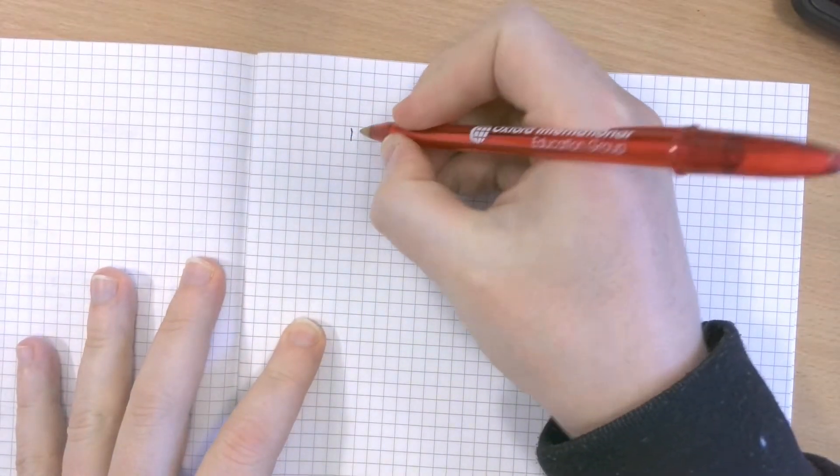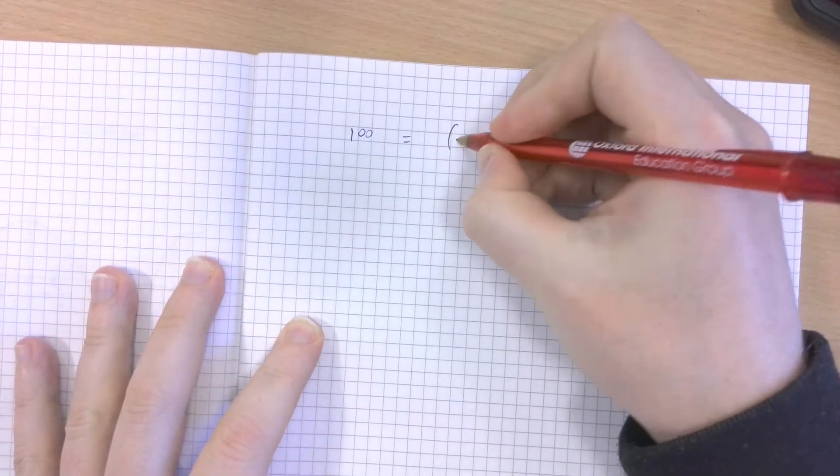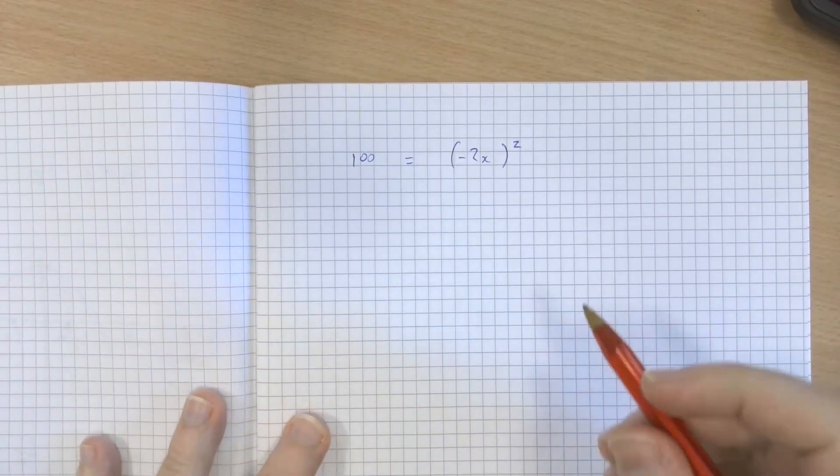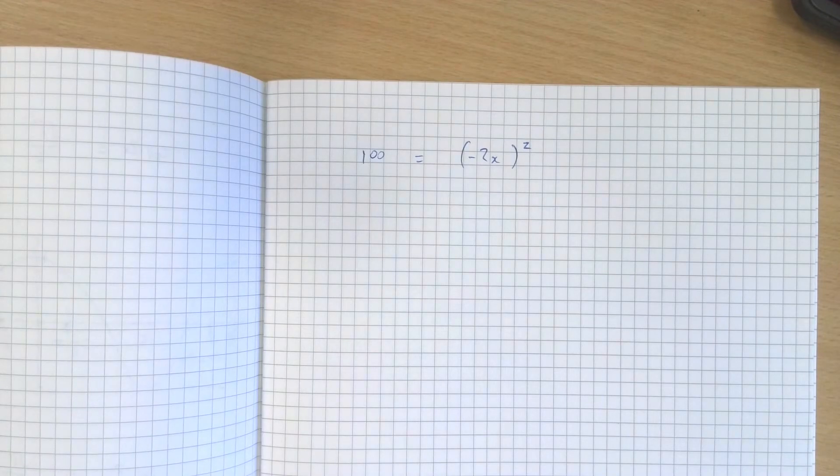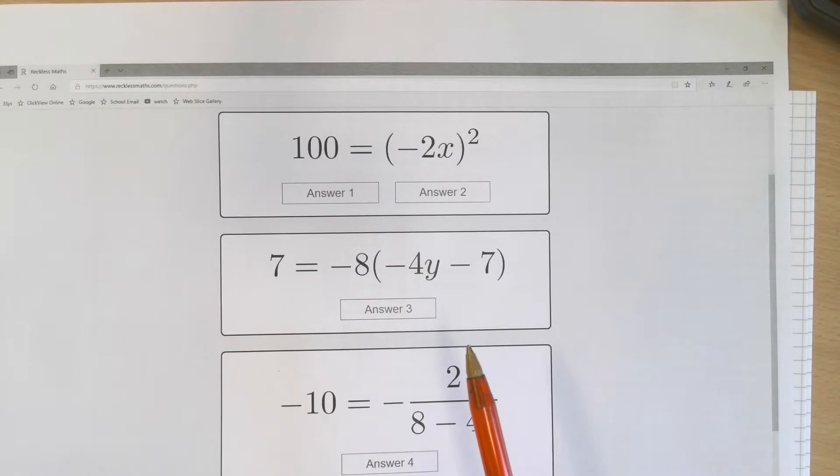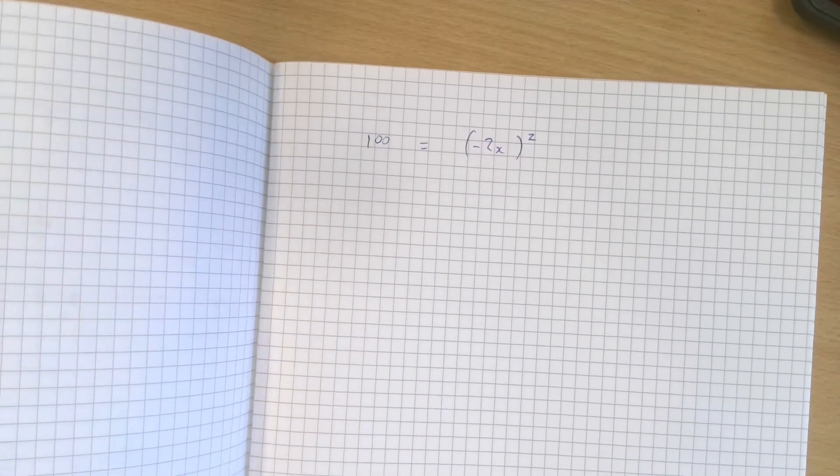So the first question is 100 equals minus 2x squared. You'll notice that in the piece of paper I've printed out from the website there are two answer boxes. That means there are going to be two solutions.